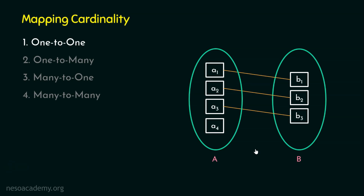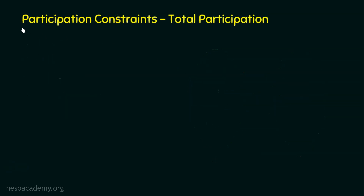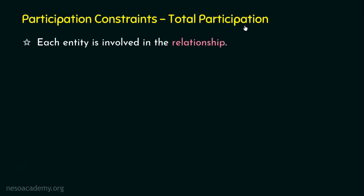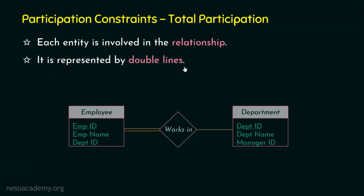Let me elaborate on total participation. Total participation means each entity is involved in the relationship set. If every entity participates in the relationship, then it is total participation. Total participation is represented by double lines in an ER diagram.